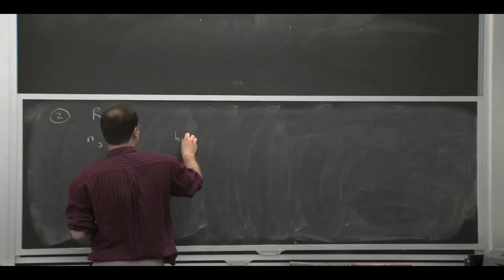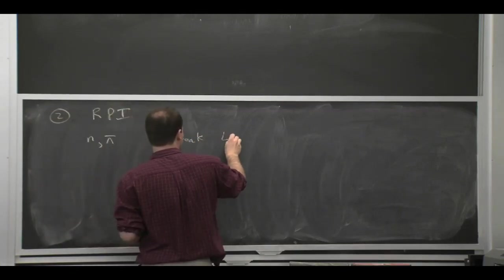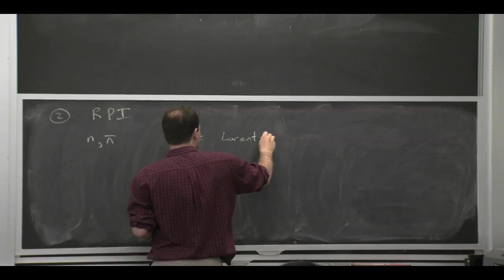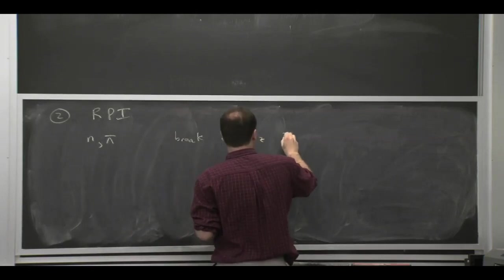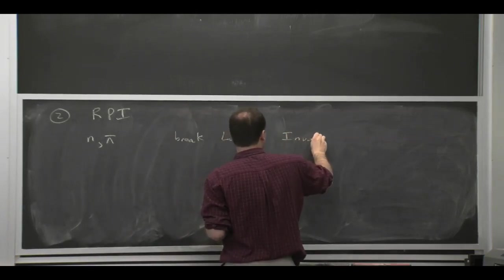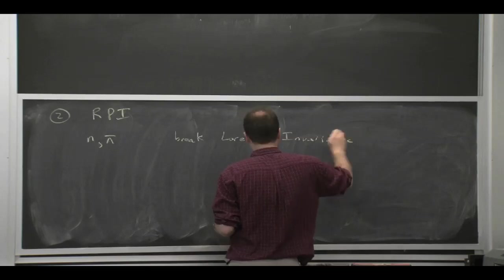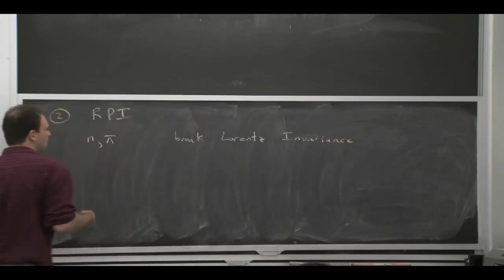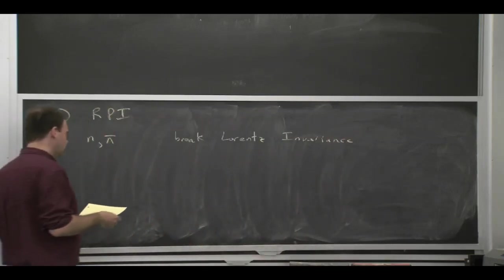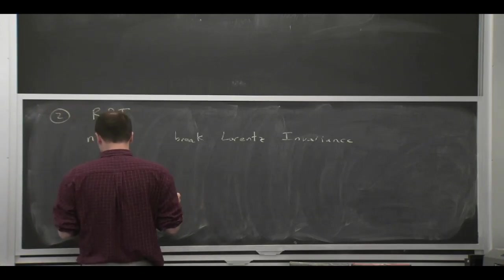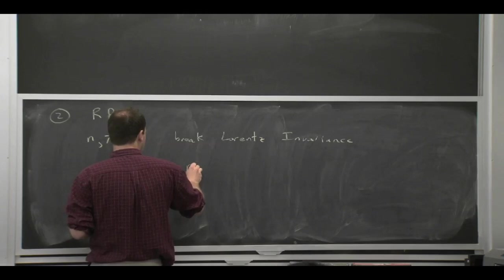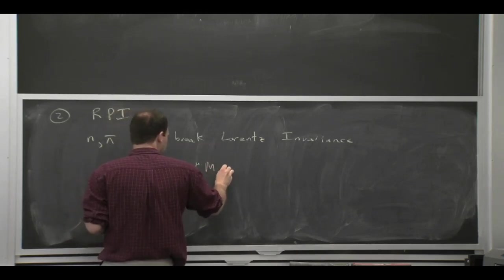But having vectors like that that we write down breaks Lorentz invariance in the same way that specifying v mu in HQET breaks Lorentz invariance. So if you say that m mu nu is the set of Lorentz transformations, the usual six generators that are anti-symmetric, then the ones that are broken are these ones.